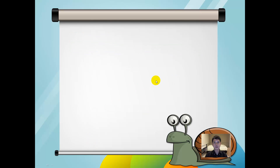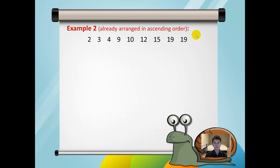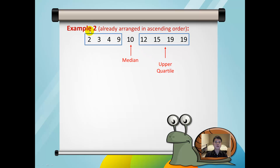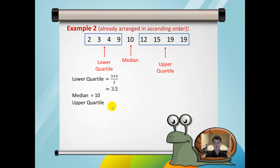We shall now look at another example on finding the quartiles. The middle is 10 and we call this the median. Excluding this number, the upper quartile is in between 15 and 19. The lower quartile is between 3 and 4. So the lower quartile equals 3 plus 4 divided by 2, which is 3.5. The median is 10, and the upper quartile equals 15 plus 19 divided by 2, which is 17. The interquartile range is 17 minus 3.5, which equals 13.5.